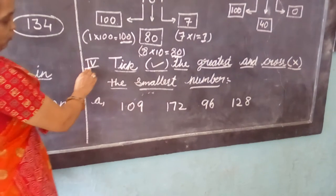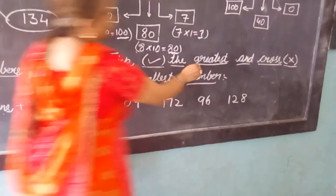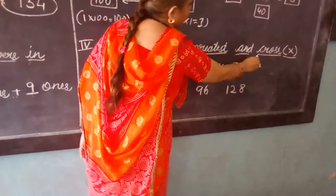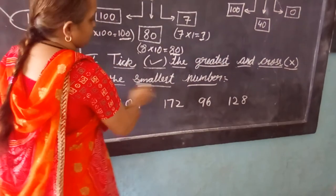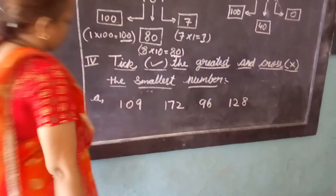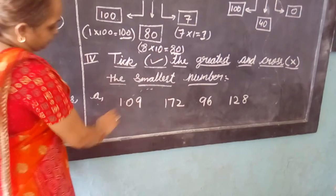Question number 4: tick the greatest and cross the smallest number. Now we are reading the numbers.